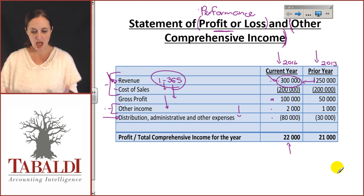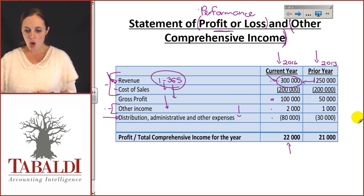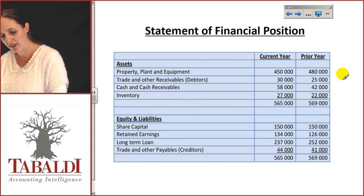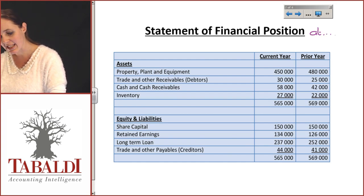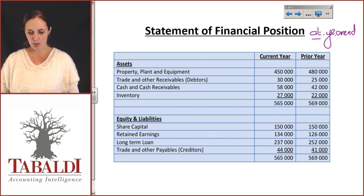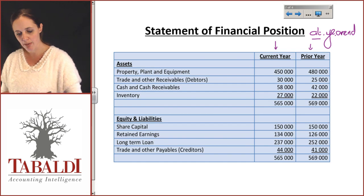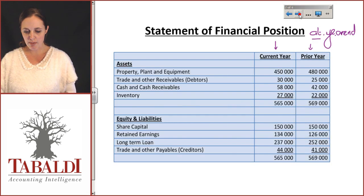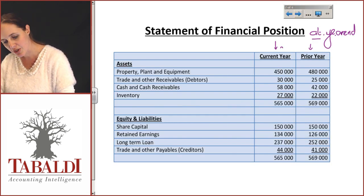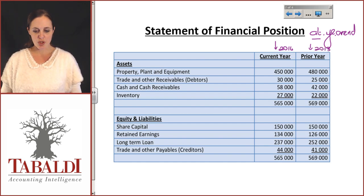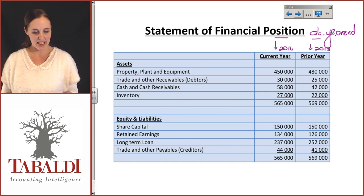The Statement of Profit or Loss is for the entire year from start to finish. The Statement of Financial Position is completely different — it's always presented at a specific date, at year-end. Just like the P&L, we compare current year and prior year information, so we'd show figures for both 2014 and 2013, giving users two years of data to compare.